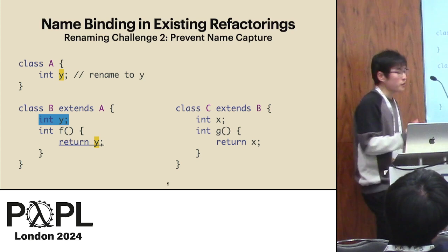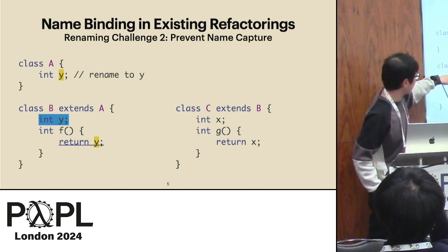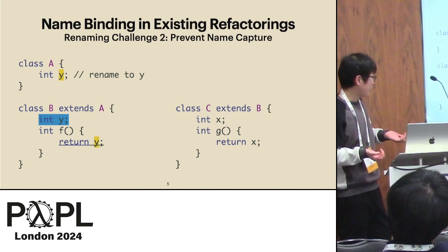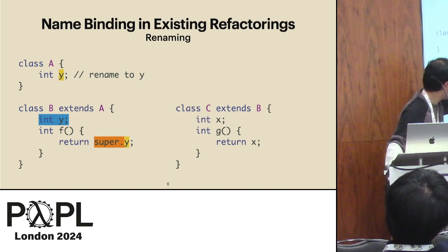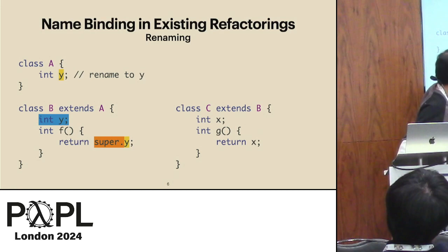There is more to it. We also need to take name capture into account. For instance, if you insert the field Y in class B, the previous renaming would not work as before. Why? Because this Y will resolve to the Y in class B, but we want this Y to resolve to Y in class A.